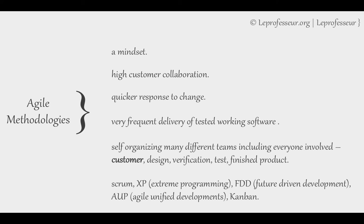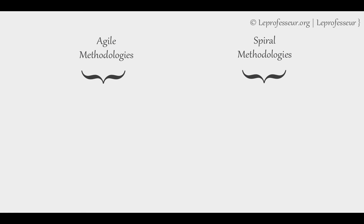We now understand what the agile framework is, and we've learned about waterfall and spiral models. Let's try to understand the key differences between agile and spiral methodologies. With agile methodologies, first we need to understand that there is a greater risk of maintenance and sustainability of the software. You are dependent on customer input, which may not be very predictable. Their requirements may change, and because you are implementing changes too often, the sustainability of the product becomes a question mark.